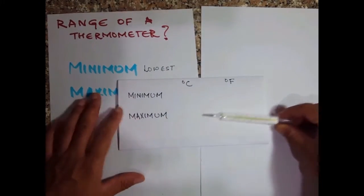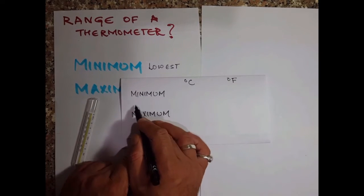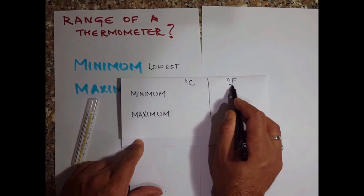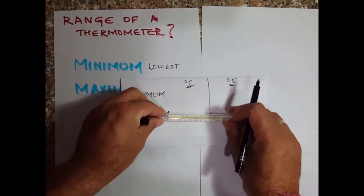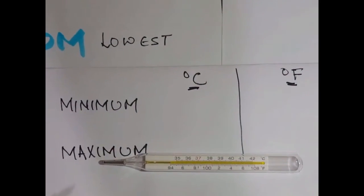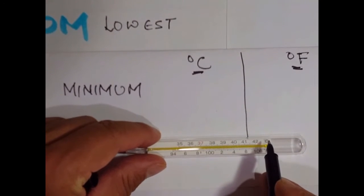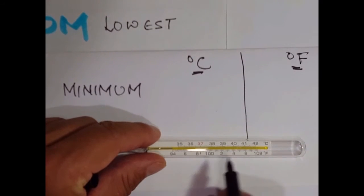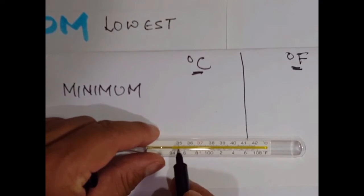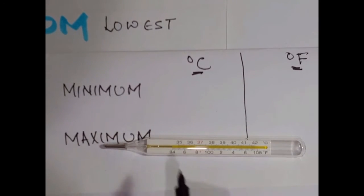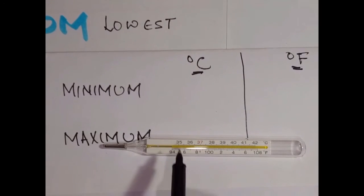Now let us find the minimum value in degree Celsius, or the range in Celsius for this. Here I have a table for degree Celsius and here I have a table for degree Fahrenheit. The Celsius scale is on the top and the Fahrenheit scale is below this yellow capillary tube. The lowest temperature on the Celsius scale that this thermometer can measure is 35 degrees.